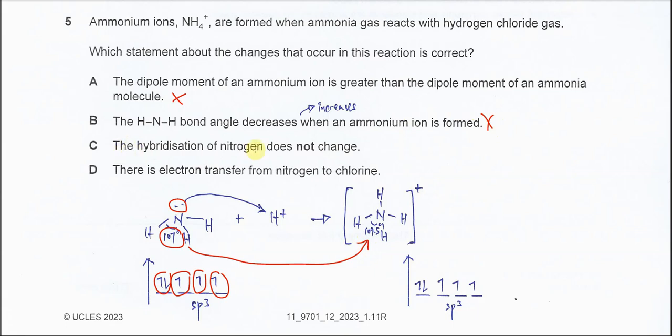C, the hybridization of nitrogen does not change. As I told you, the hybridization before and after the dative bond formation is still the same, sp3. So the answer is C.